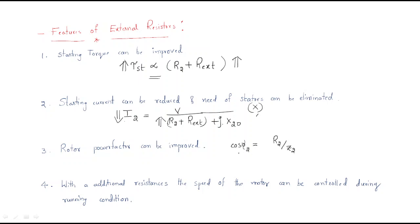Third, the rotor power factor can be improved. By adding external resistance, the rotor power factor formula becomes (R2 plus external resistance) divided by Z2. The numerator is increased, and whenever the numerator increases, the power factor also increases. That is why the rotor power factor can be significantly improved.